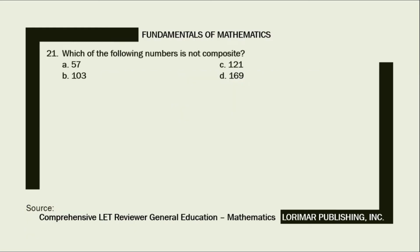Problem number 21. Which of the following numbers is not composite? A. 57, B. 103, C. 121, D. 169. Here is our solution.